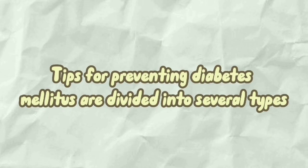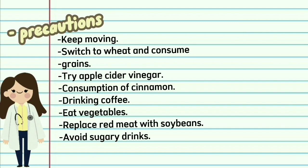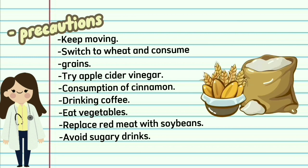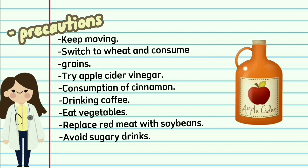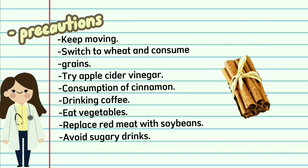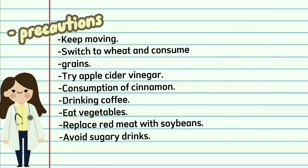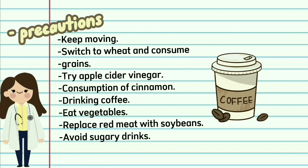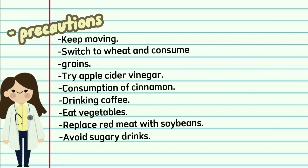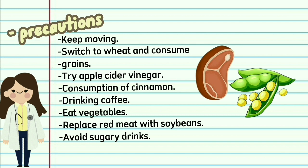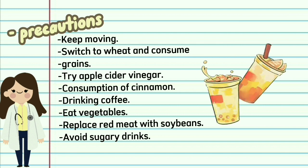Tips for preventing Diabetes Mellitus are divided into several types: 1. Keep moving, 2. Sweat to wait and consume, 3. Grins, 4. Apple cheddar finisher, 5. Consumption of cinnamon, 6. Drinking coffee, 7. Eat vegetables, 8. Reflectured meat with soybeans, 9. Avoid sugar dryness.